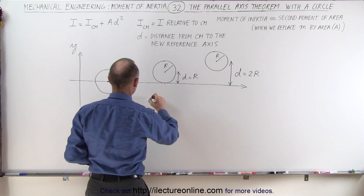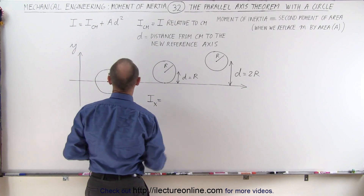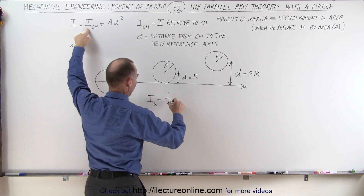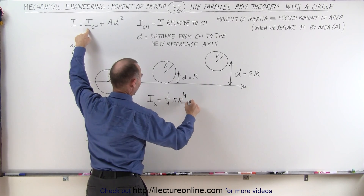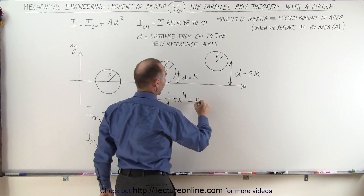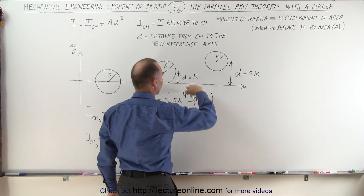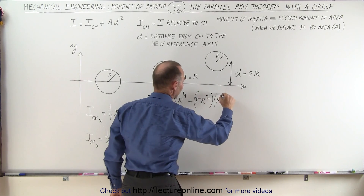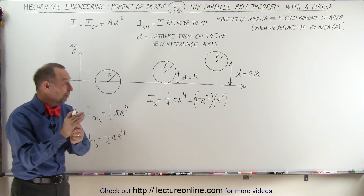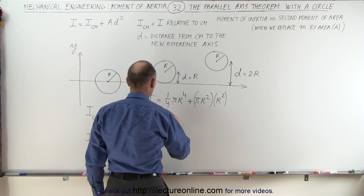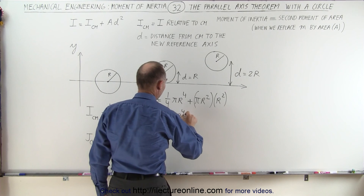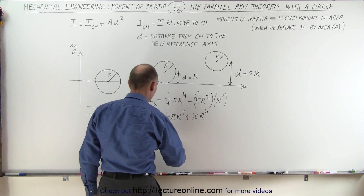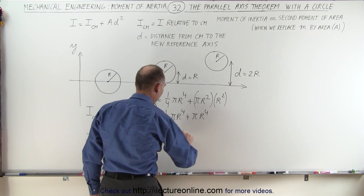In this case, the moment of inertia relative to the x-axis is equal to the moment of inertia relative to the center mass — which is one-quarter pi r to the fourth power — plus the area of the circle, which is pi r squared, multiplied by the distance moved squared, r squared. Combining that: one-quarter pi r to the fourth plus a whole pi r to the fourth gives us five over four pi r to the fourth.